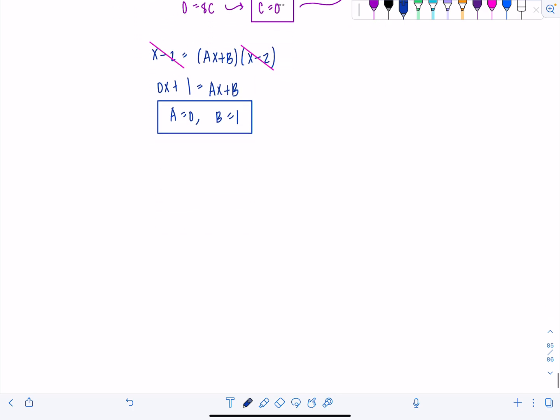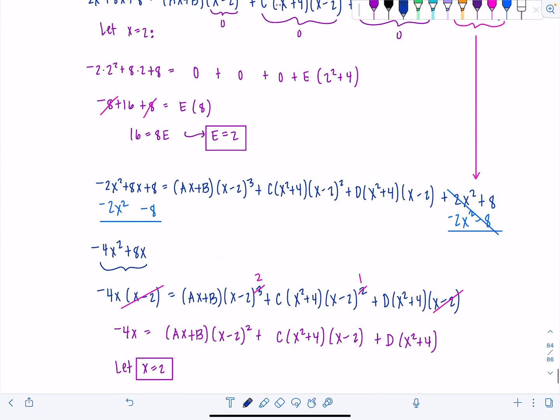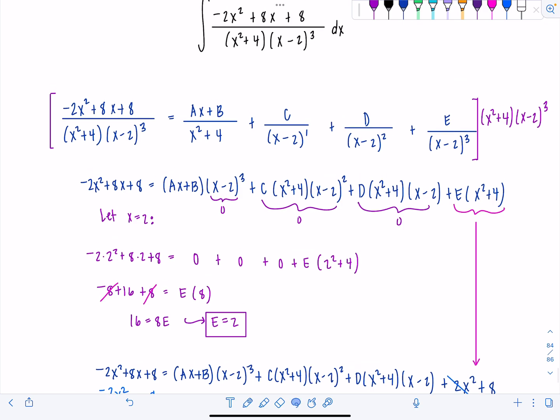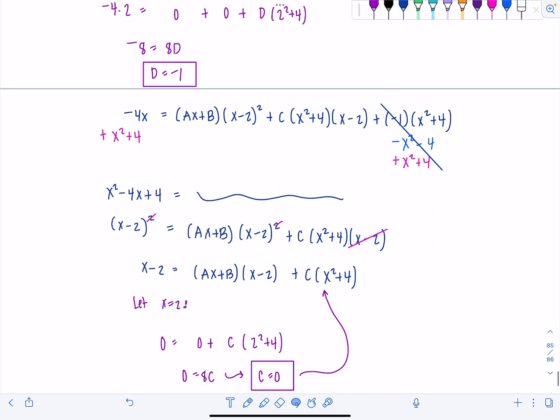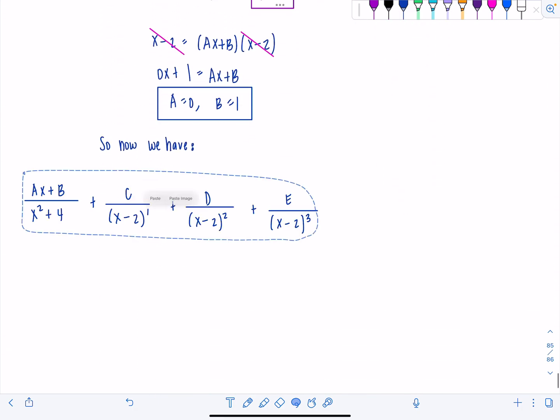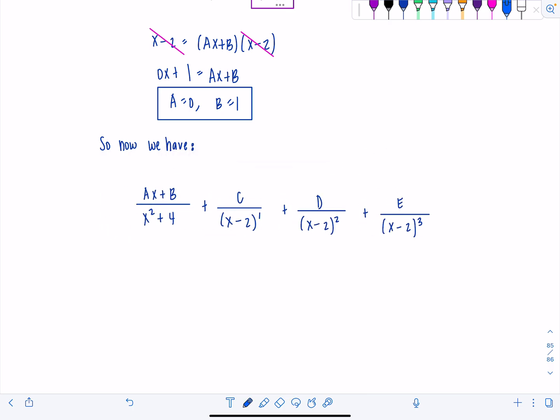So now what do we have? Let's put this all back into our original integral. Let me copy paste it from up above. Because we have all the constants now. And we know that a is 0. So this is going to be 0x plus b was 1. C was also 0. So this whole term's gone. d was negative 1 and then e was 2.